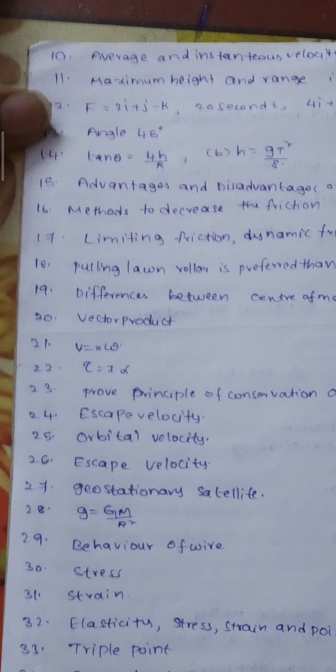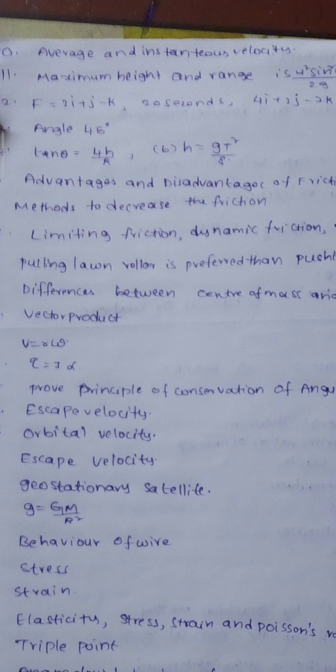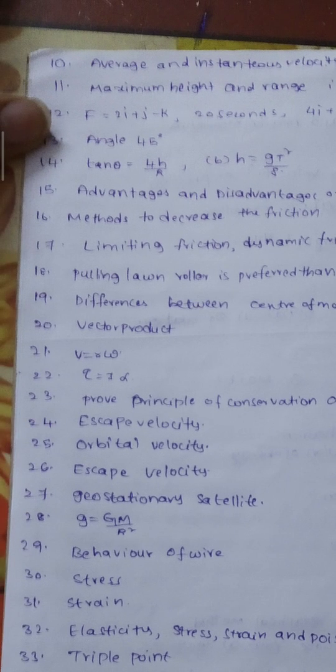The next important question involves vectors: 2a + j − k at 20 seconds, and 4a + 2j − 3k. That question is important and carries 4 marks. In the first paper, the formula 10th = 4h/r and h = gt²/8 is confirmed. We have two 4-mark questions confirmed.